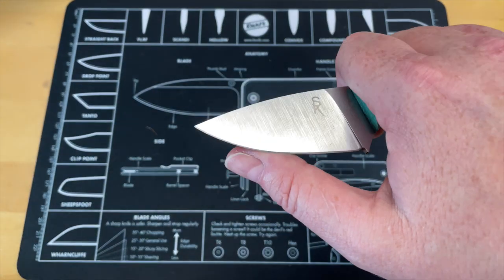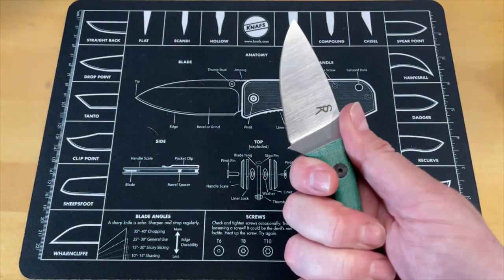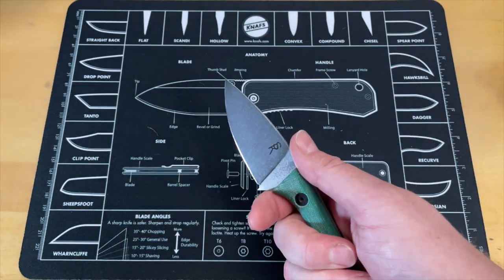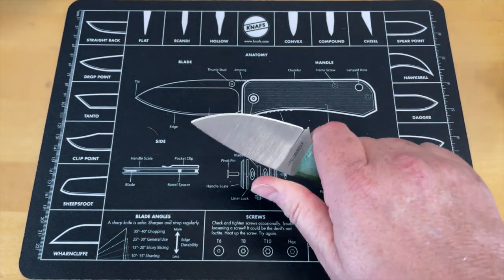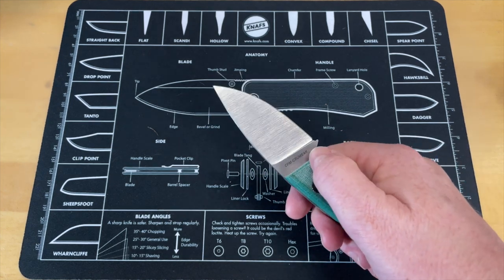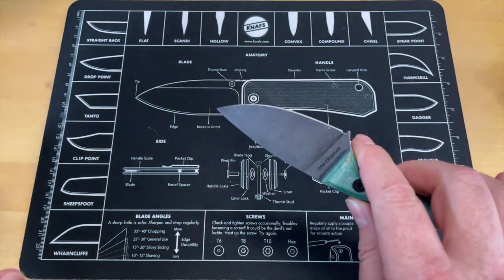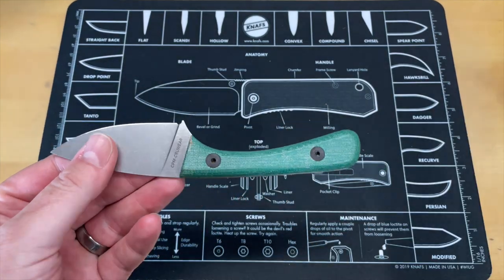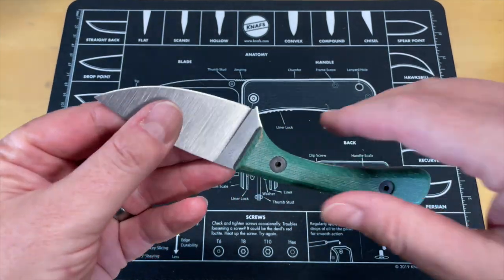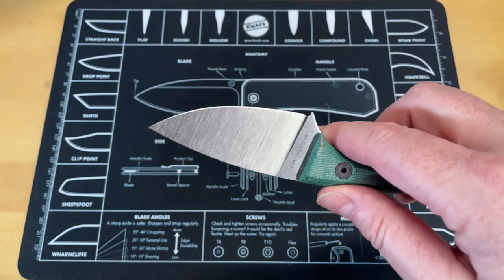And I told Alex I was like, the only thing I've had that held an edge through as much cardboard as well is the knives that I've made in S125V. And I'm not trying to toot my own horn, S125V is just a monster.